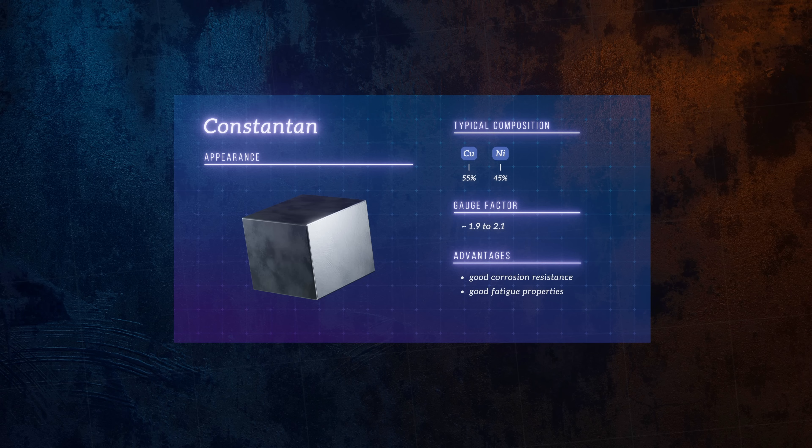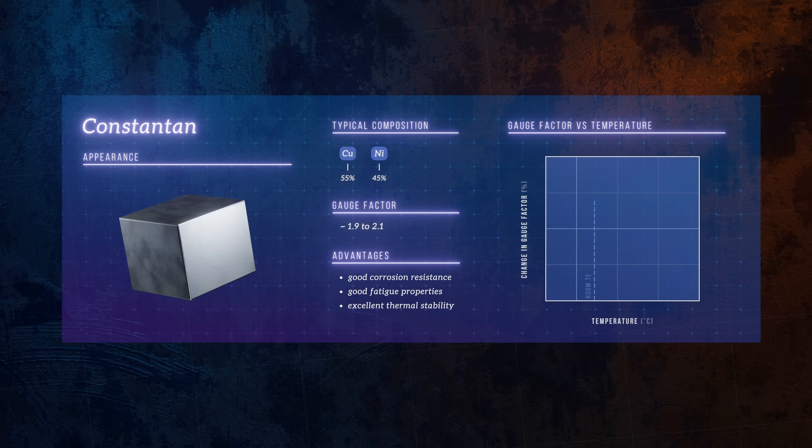But the main reason it's such a good choice is its performance over temperature. Most materials have a gauge factor that varies significantly with temperature, which makes it difficult to get accurate measurements when working with large temperature ranges. But constantin is very stable. Its gauge factor varies very little from minus 50 to 150 degrees Celsius and beyond. In fact, that's where the material gets its name. And that's the main reason it's the most popular material for use in strain gauges.